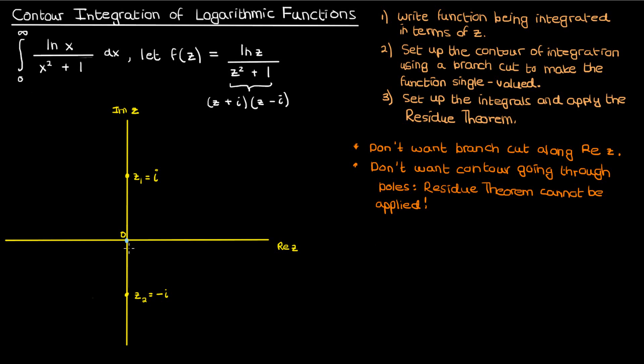So keeping all this in mind here's what I'll do. I'll make a branch cut along the negative imaginary axis and keep the argument of my complex number z between negative pi by 2 and 3 pi by 2. I also need to avoid the origin.